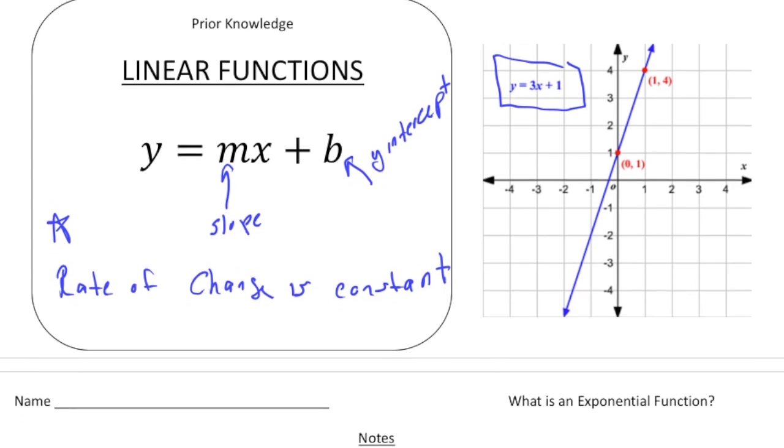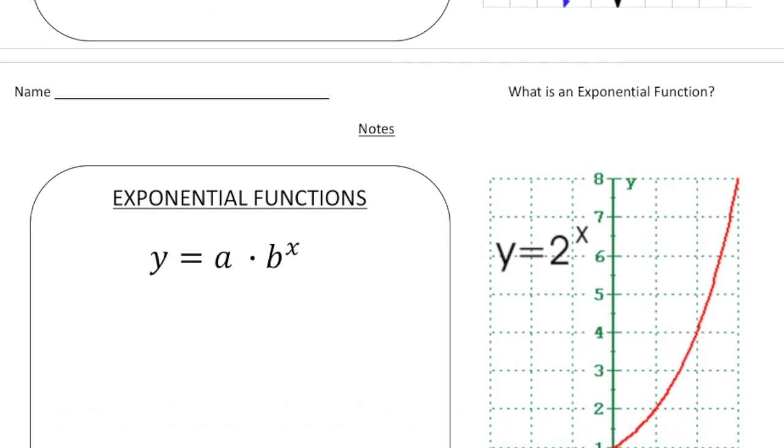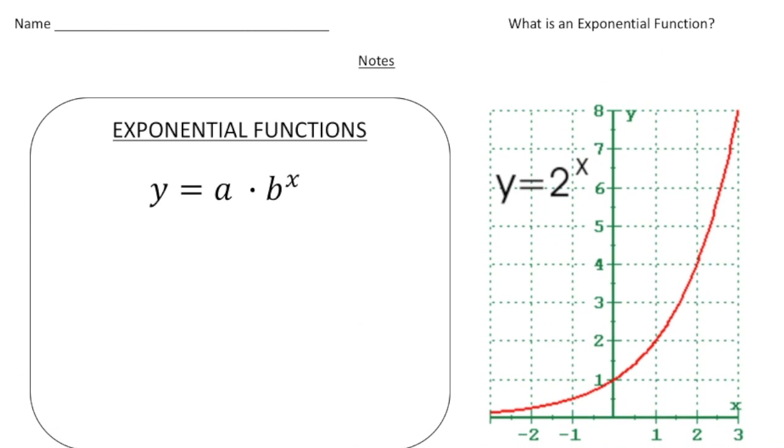Because these are very different than linear functions. Over here we have a graph of an exponential function y equals 2 to the x and notice that this graph no longer is linear. It kind of starts off with a slow build and then it kind of takes off like a rocket. That's a characteristic of an exponential function.